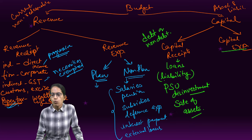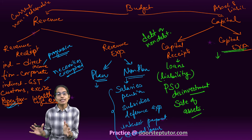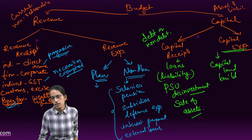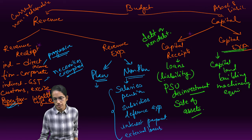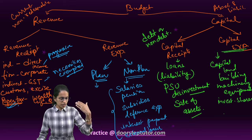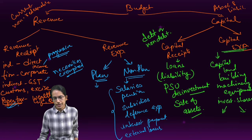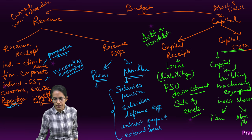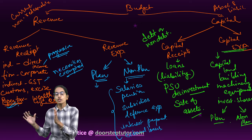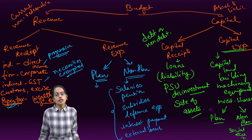Capital expenditure is any expenditure that results in an asset — land, buildings, machinery, equipment, investment in shares, or advances for loans given from the centre to states or union territories. Capital expenditure can also be classified as plan and non-plan: plan covers the centre's assistance to states and union territories for overall building purposes; non-plan includes socioeconomic services.